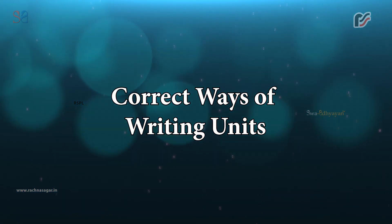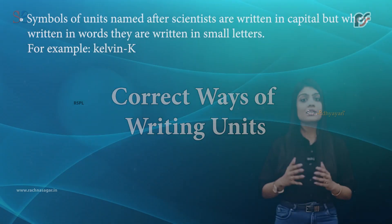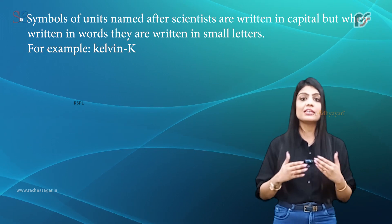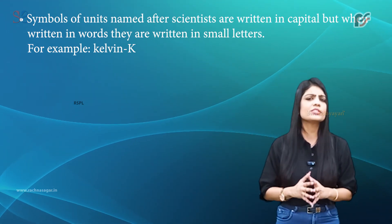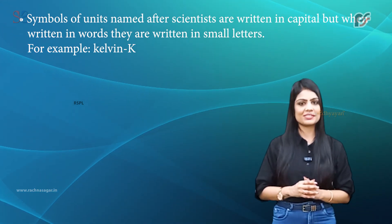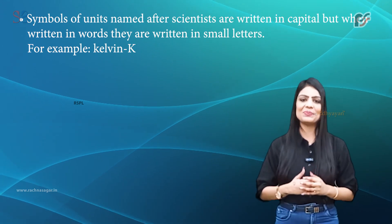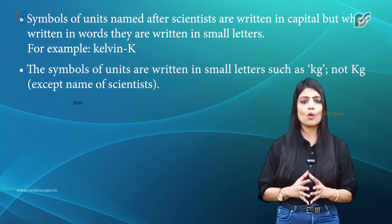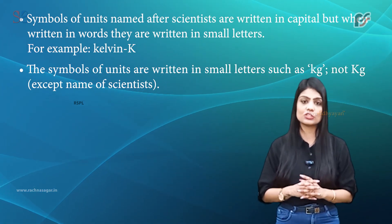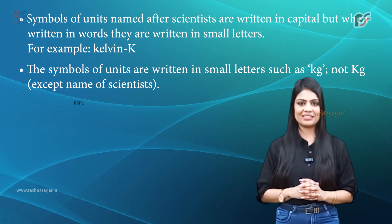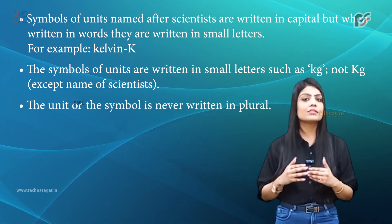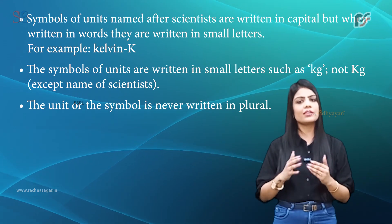Correct ways of writing units: Symbols of units named after scientists are written in capital letters, but when written in words, they are written in small letters. For example, Kelvin is written as K. The symbols of units are written in small letters such as kg, except for names of scientists. The unit or symbol is never written in plural.